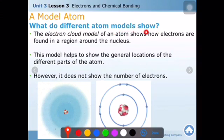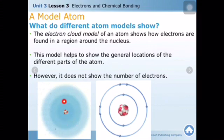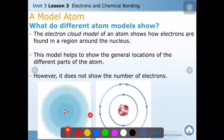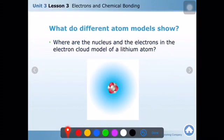The electron cloud model of an atom shows how electrons are found in a region around the nucleus. This model helps show the general location of the different parts of the atom. However, it does not show the number of electrons — just the location of each sub-particle. In the lithium atom electron cloud model, electrons are present around the nucleus, where the protons and neutrons are located.